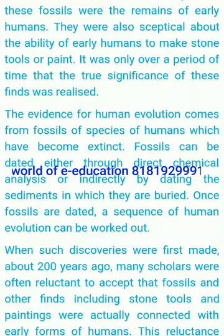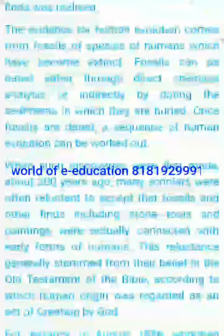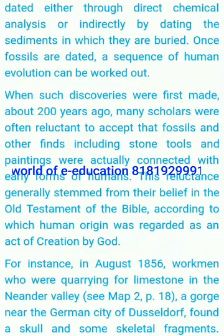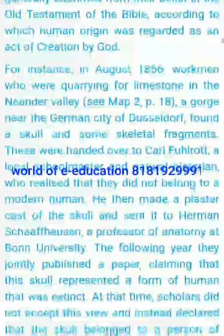The evidence for human evolution comes from fossils of species of humans which have become extinct. Fossils can be dated either through direct chemical analysis or indirectly by dating the sediments in which they are buried. Once fossils are dated, a sequence of human evolution can be worked out. When such discoveries were first made, about 200 years ago, many scholars were often reluctant to accept that fossils and other finds including stone tools and paintings were actually connected with early forms of humans. This reluctance generally stemmed from their belief in the Old Testament of the Bible, according to which human origin was regarded as an act of creation by God.